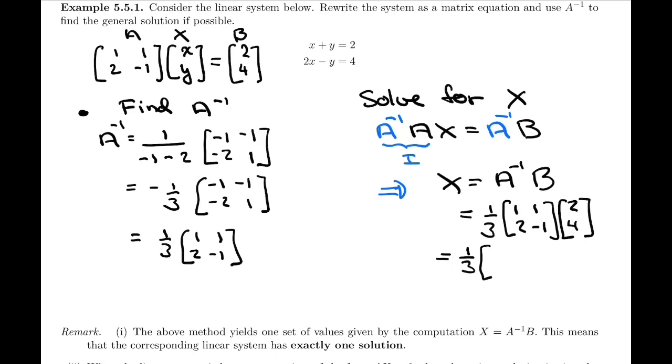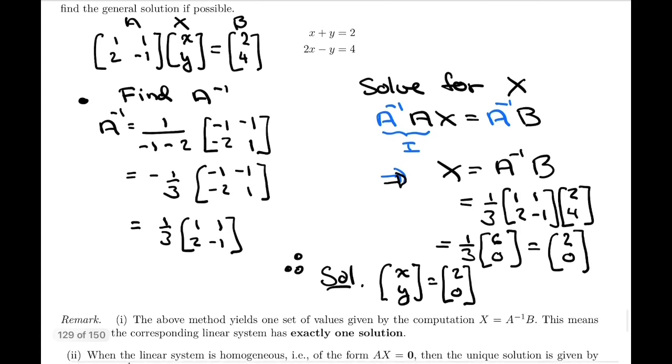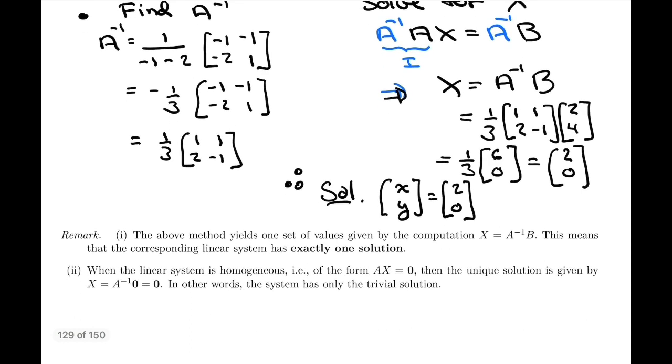You can see why I left the one third outside, so I can do the matrix multiplication first. Two by two times two by one gives a two by one. So 2 plus 4 is 6, and 4 minus 4 is 0. Now multiplying the one third, I have [2; 0]. That is the unique solution of the linear system. I'll write it as solution: x equals 2, y equals 0. You can also use the vector form [2; 0].